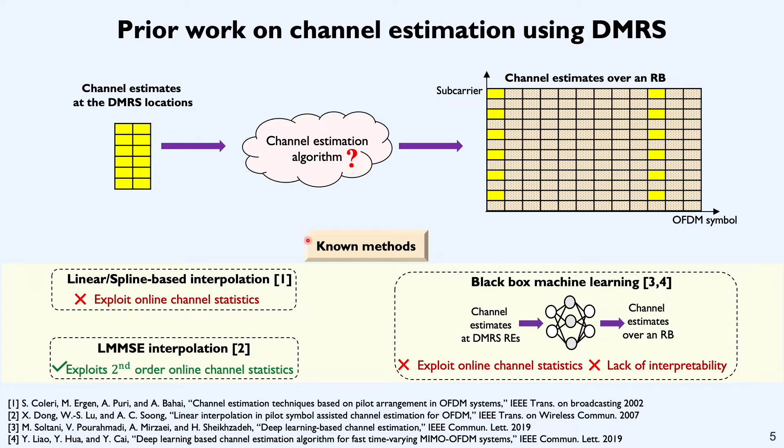Prior work has looked at three different directions. The first direction is based on linear or spline interpolation, and the second direction is based on LMMSE interpolation, wherein the estimator is linear and it exploits the second order channel statistics, such as frequency domain correlation and the time domain correlation. And finally, there's been some interesting work on black box machine learning techniques that just run some kind of a regression algorithm, taking in channel estimates at DMRS REs as input and giving out channel estimates over an entire RB. In this work, we propose a new technique that has all the advantages of LMMSE based interpolation as well as machine learning based methods.